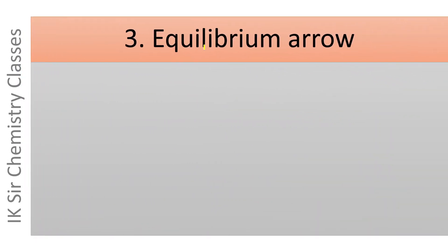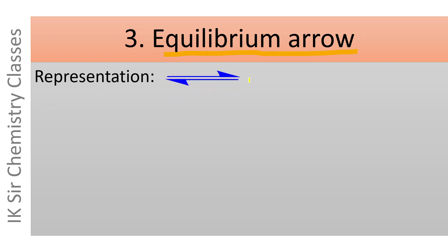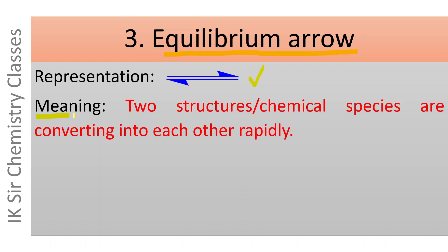The third one is the equilibrium arrow. This equilibrium arrow is represented by two half-headed arrows pointing in opposite directions. Its meaning is: two structures or chemical species are converting into each other rapidly. This equilibrium arrow is also known as the reversibility arrow — it means the reaction takes place in both directions simultaneously.